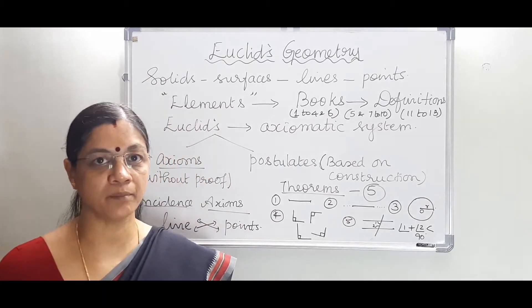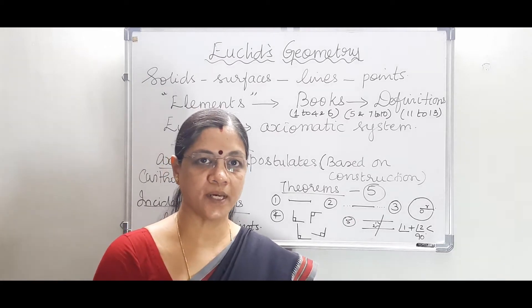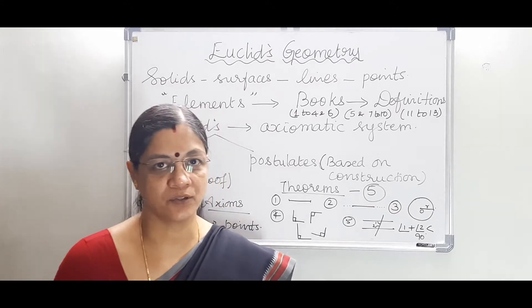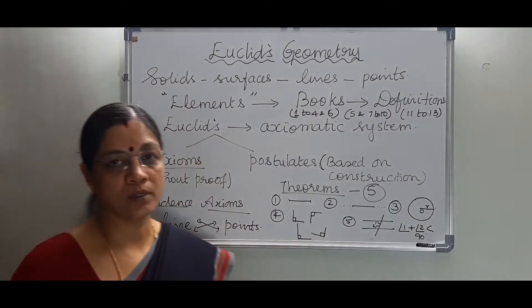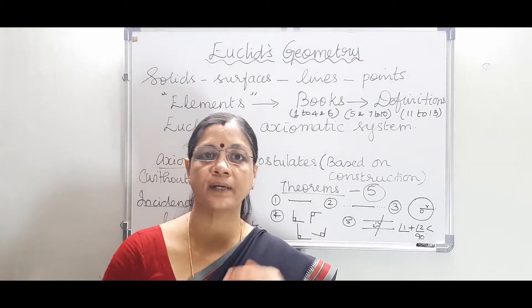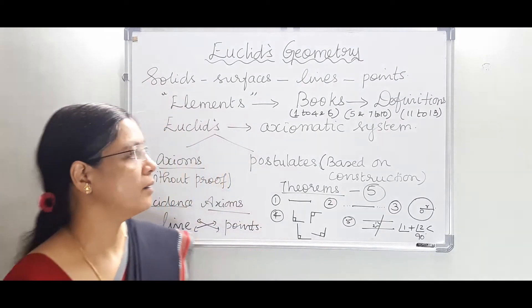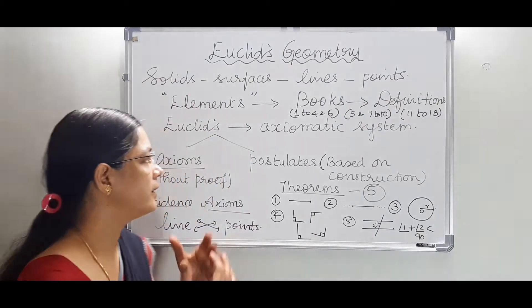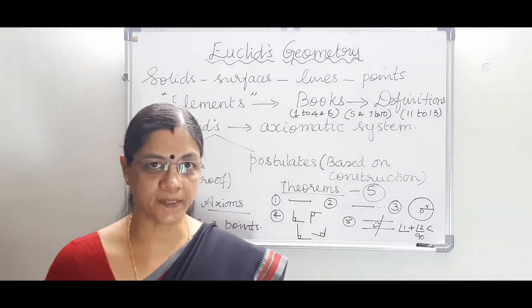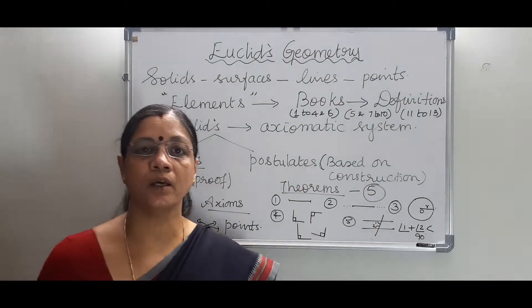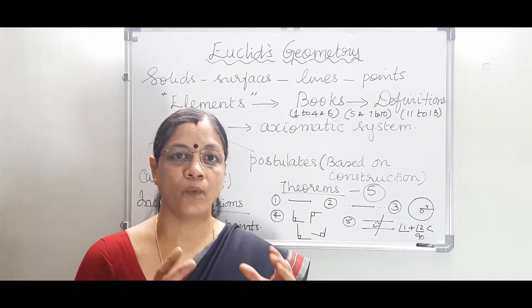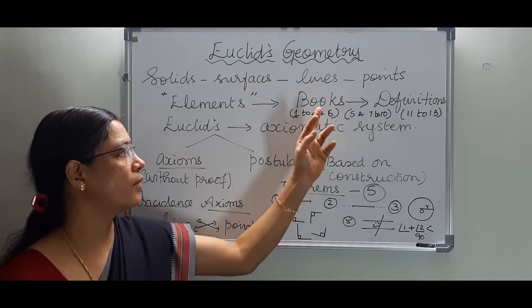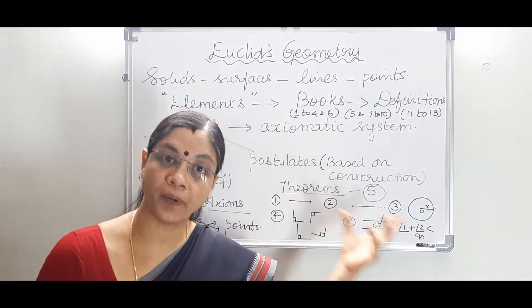He was a Greek mathematician and in those days Greeks were the first to reason out the truth behind geometrical construction. What he did was he compiled all the works of his forefathers and made a treatise called Elements. These Elements were divided into 13 chapters and each chapter became books. Books 1 to 4 and 6 are based on plane geometry.